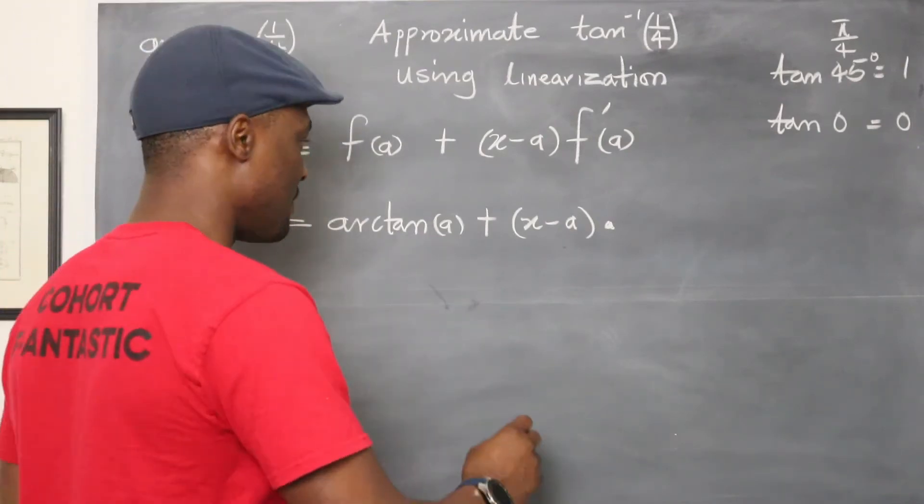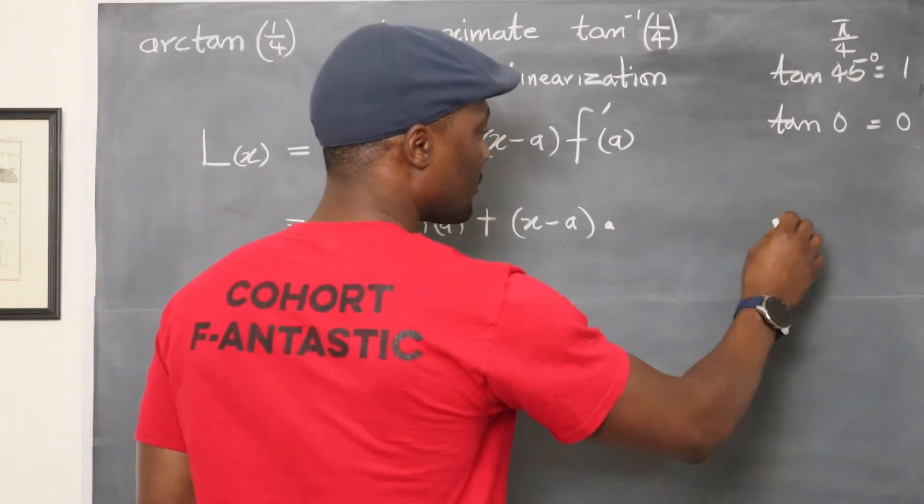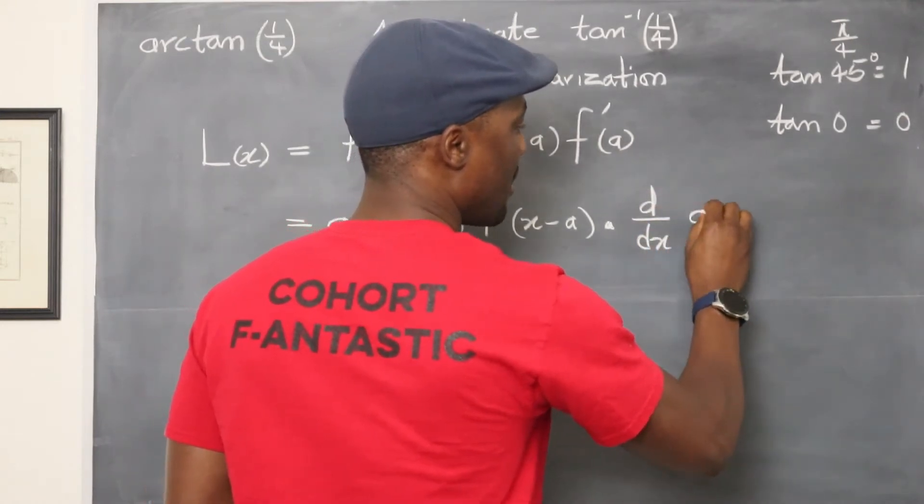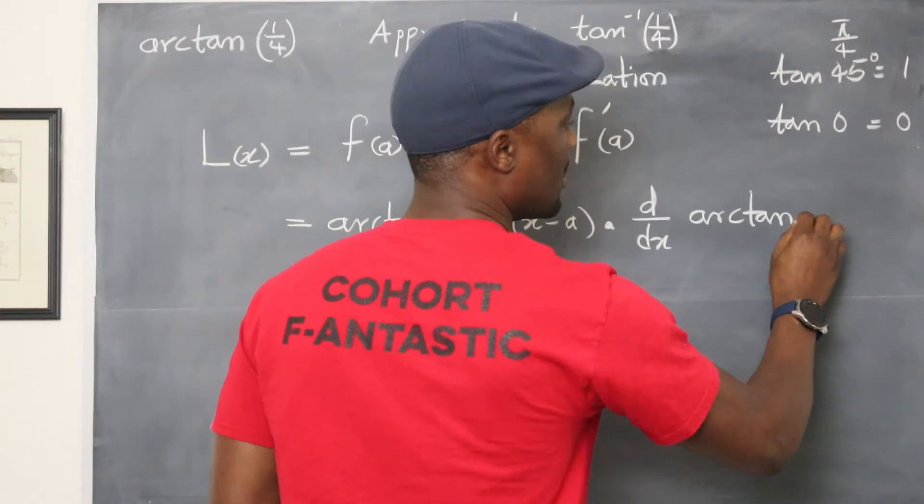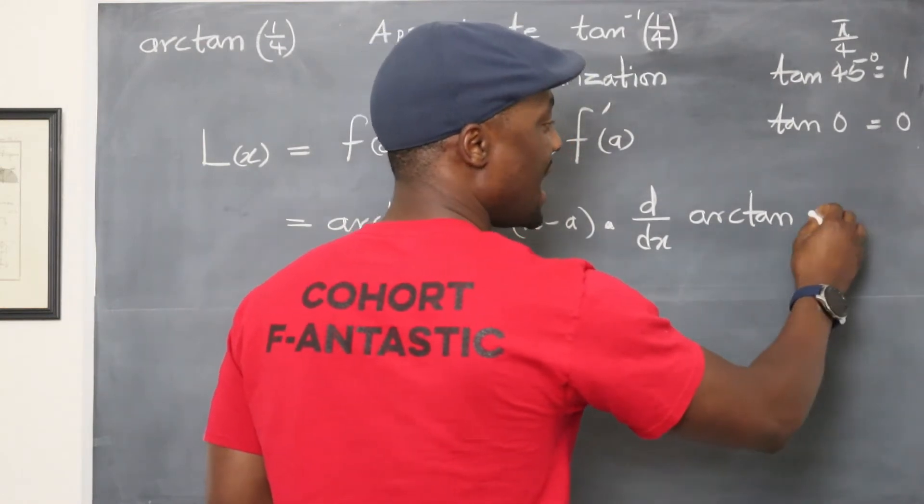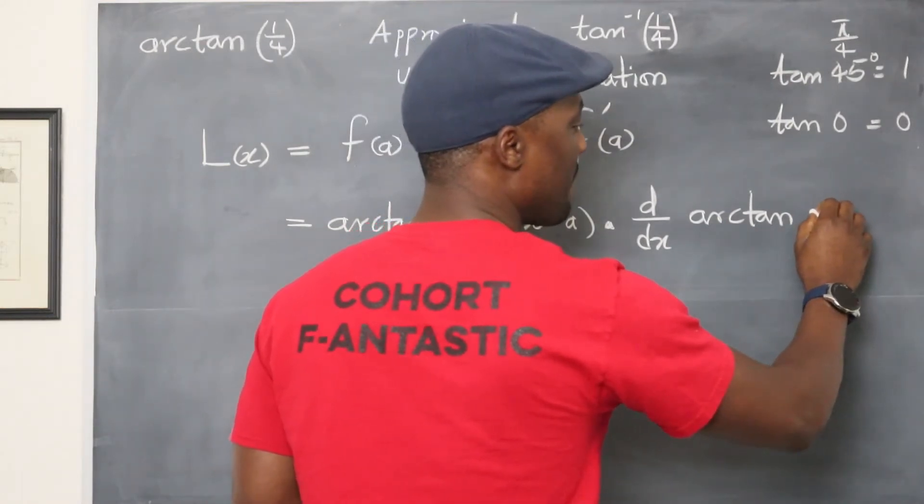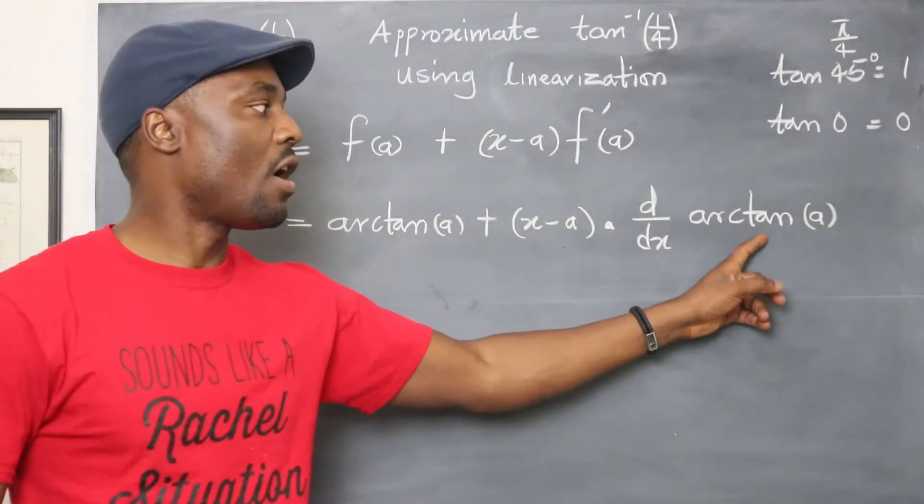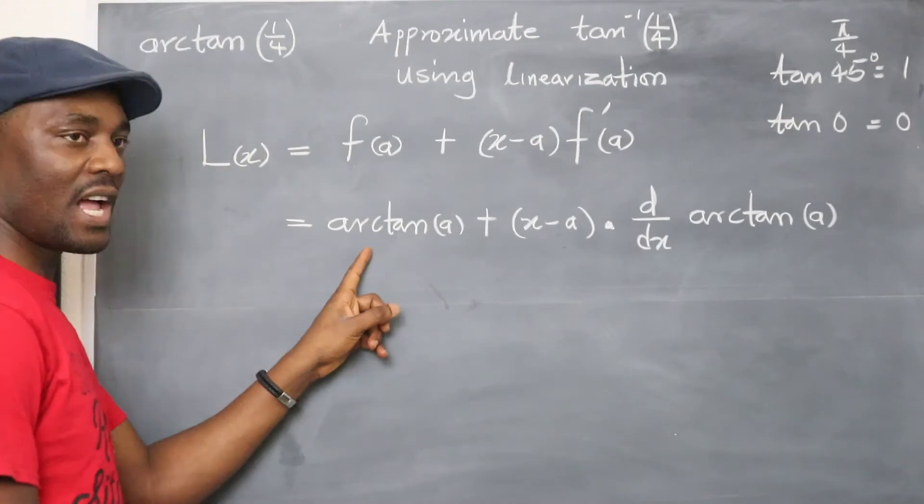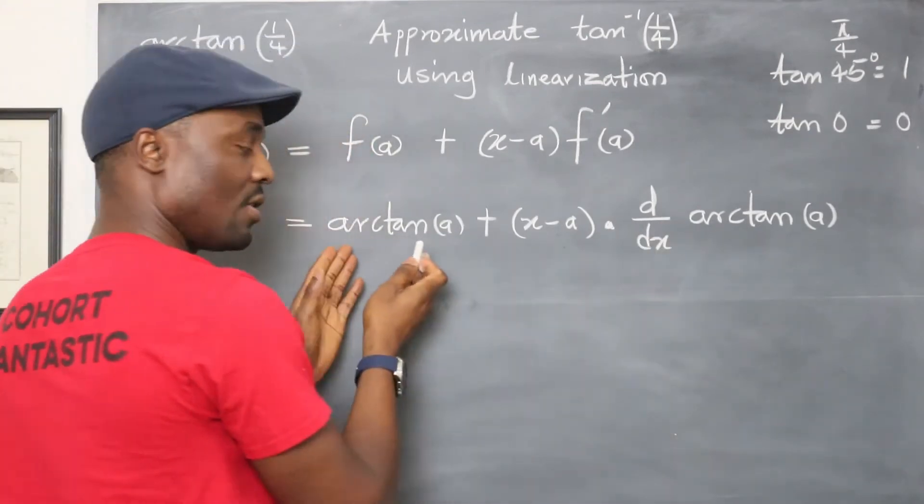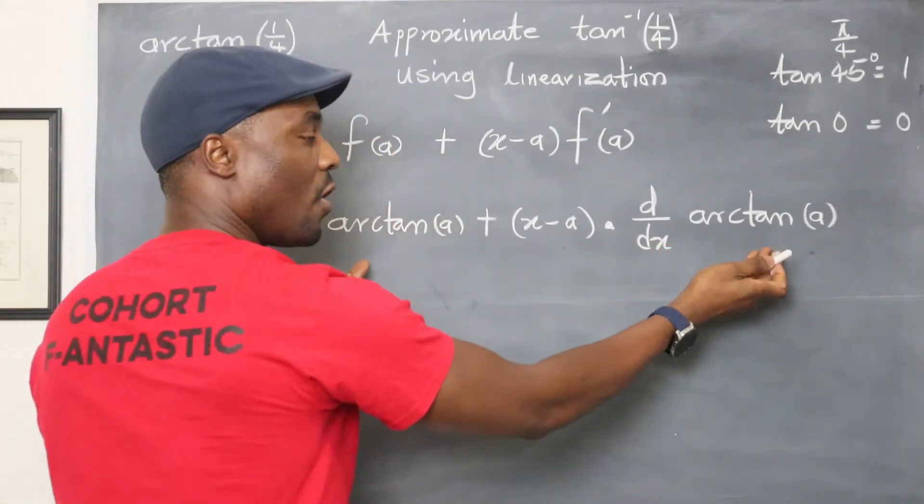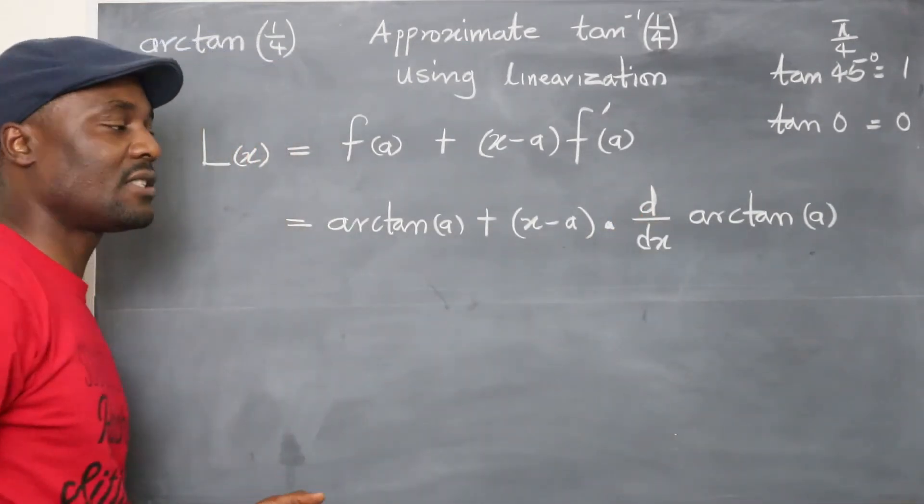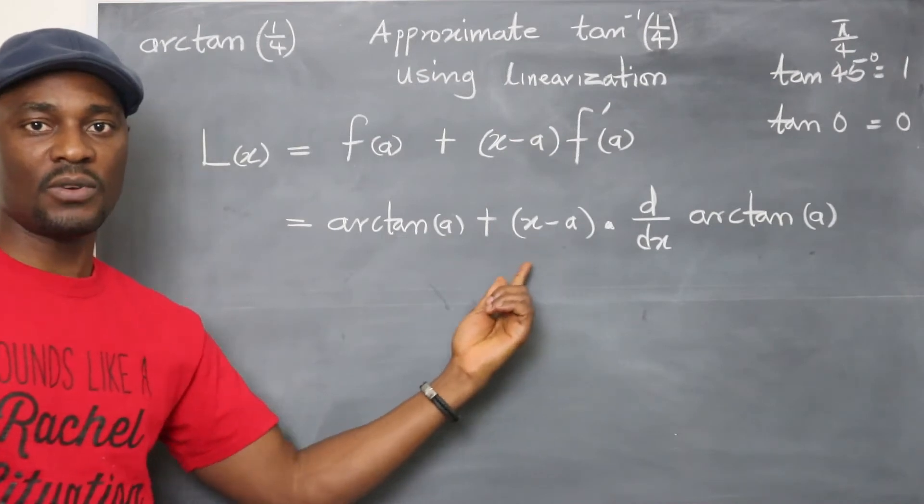So if you differentiate arc tan x, it's going to be d/dx of arc tan. Evaluate it at a. So when you differentiate arc tan x, you can see the first term and the second term are almost the same. It's just that the second term is differentiated and multiplied by (x minus a). This doesn't change.